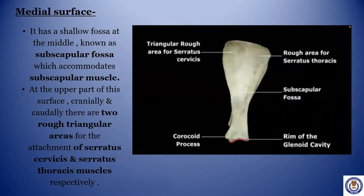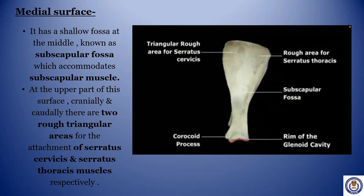Medial surface. It has a shallow fossa at the middle known as the subscapular fossa, which accommodates the subscapular muscle. At the upper part of the surface, cranially and caudally, there are two rough triangular areas for the attachment of serratus cervicis and serratus thoracis muscles respectively.